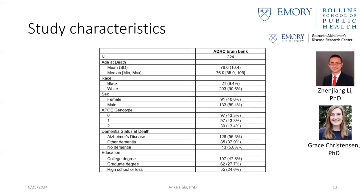We only had less than six percent who were controls — basically without a diagnosis of Alzheimer's disease or dementia before they died. That's why in this study we did not look at Alzheimer's disease as a yes/no outcome, but rather at those neuropathology markers which describe the severity of Alzheimer's disease.